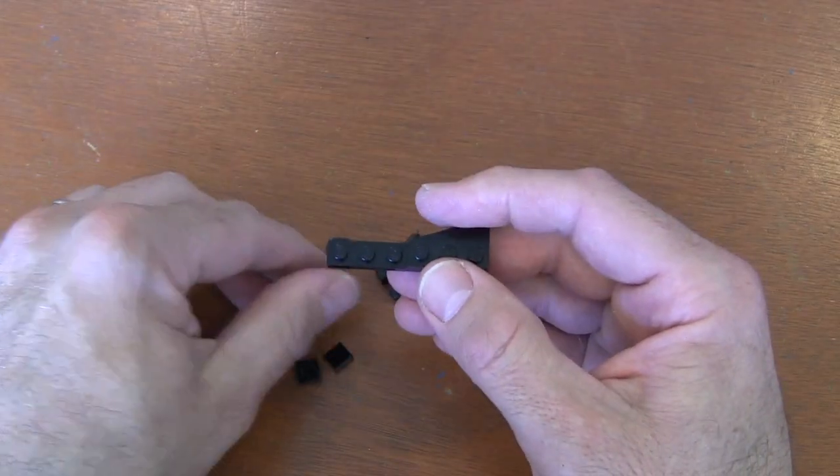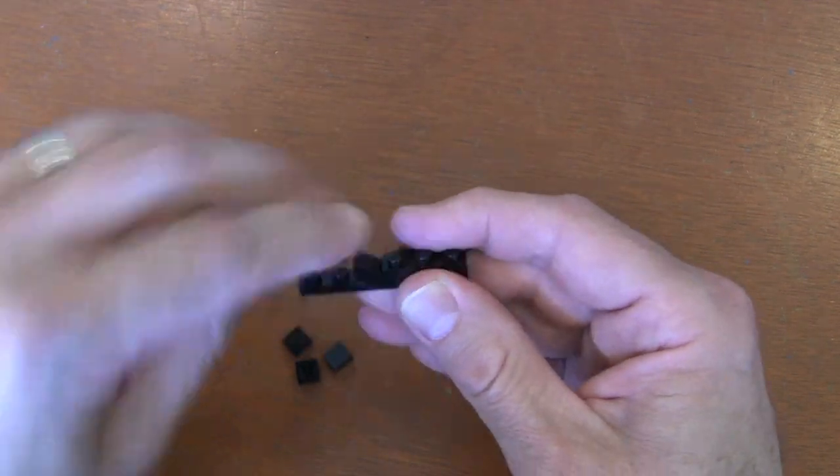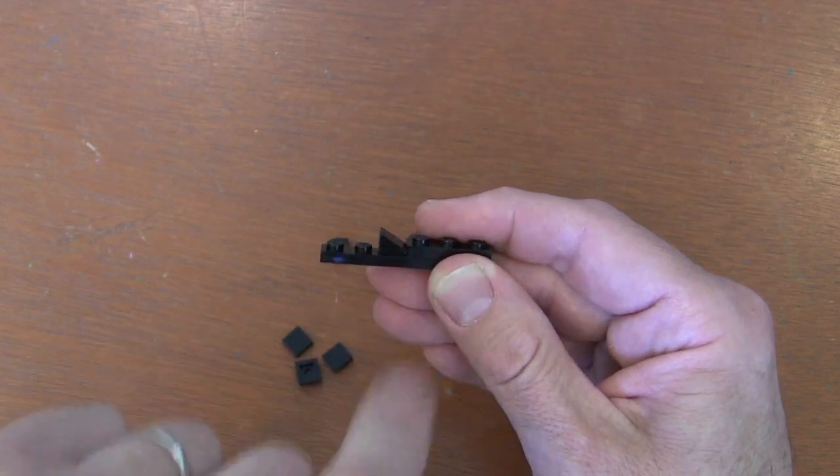Now, on the next stud, I'm going to grab a cheese wedge slope. I'm going to put the thin end near the wedge plate, and then it slopes up to the center.